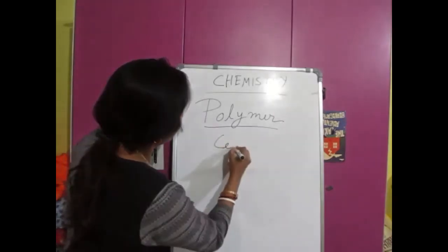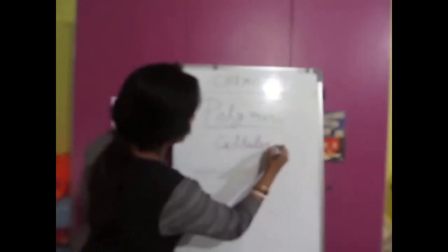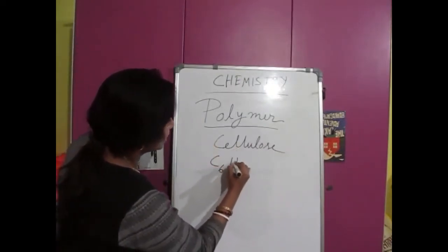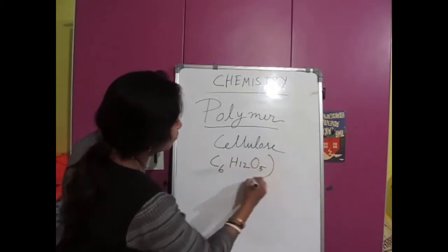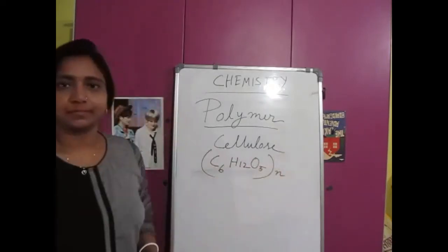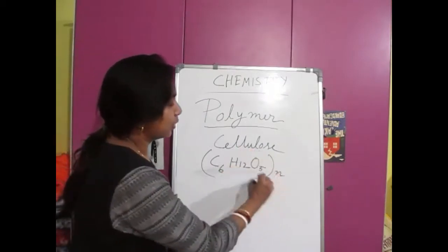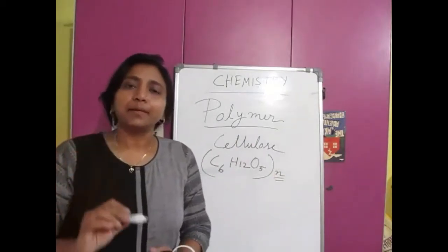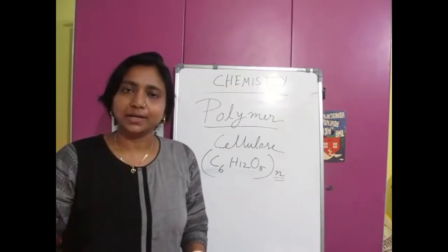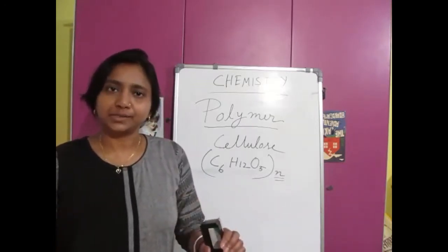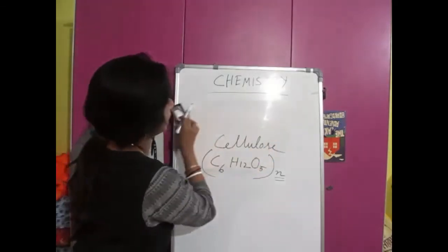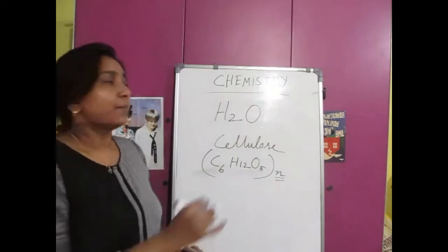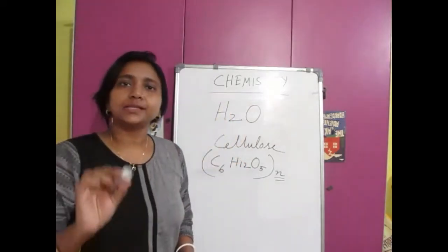Cellulose is one of the polymers. What is the structure of it? That is C6H12O5 whole N. You can see there is a number N — N may be 100, N may be 1000, that is the multiple of molecules. If I write water, H2O, I am not writing H2O whole N. That is the single molecule.